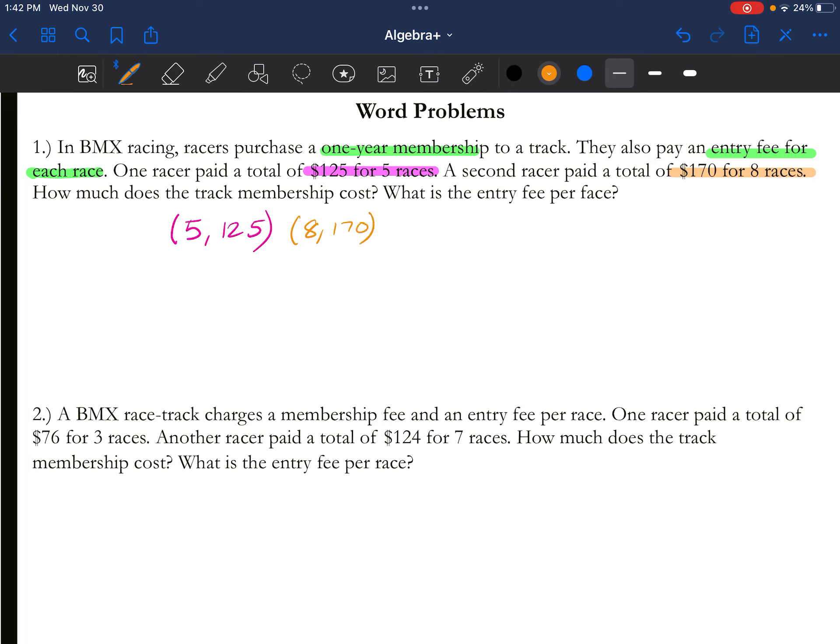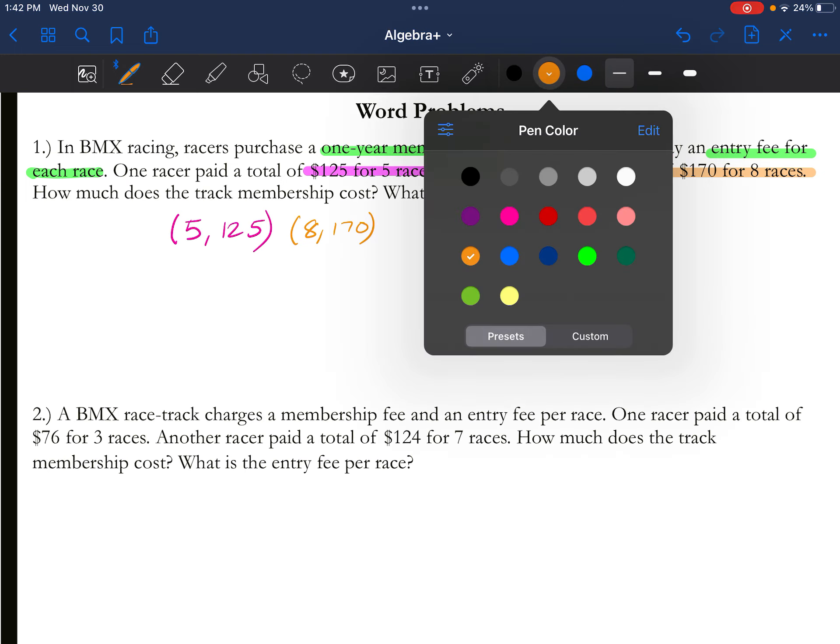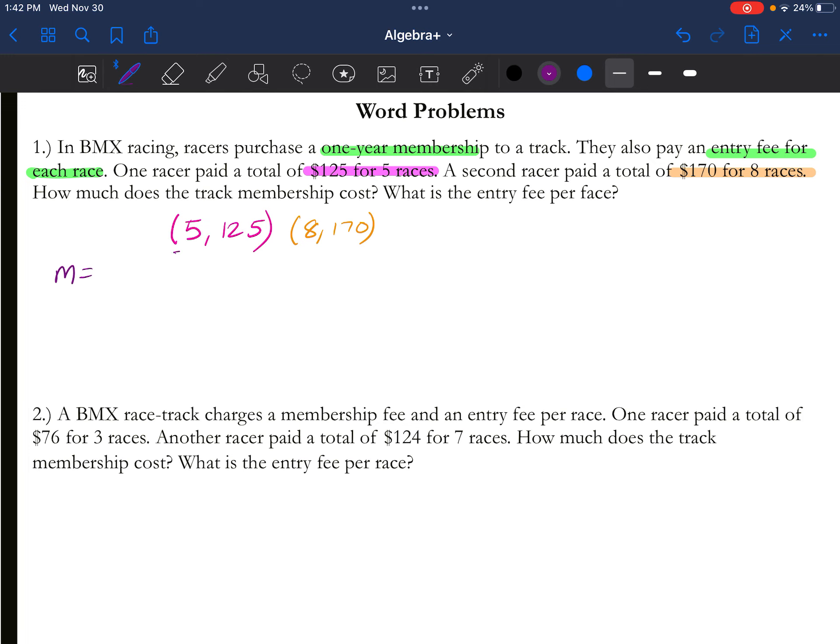You still have another one here. It says a second racer paid a total of $170 for 8 races. So again, you have (8, 170). Well, I have two points, what can I do? I can find the slope. So go ahead and calculate your slope. Make it your x1, your y1, your x2, your y2. You're gonna find out your slope is 15.